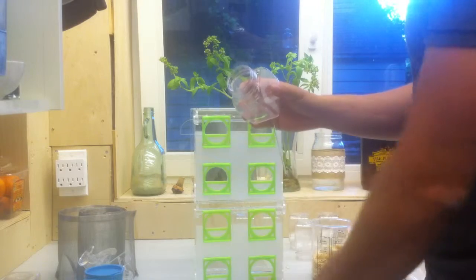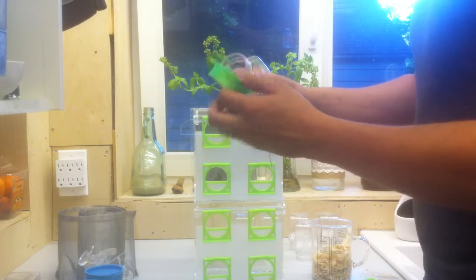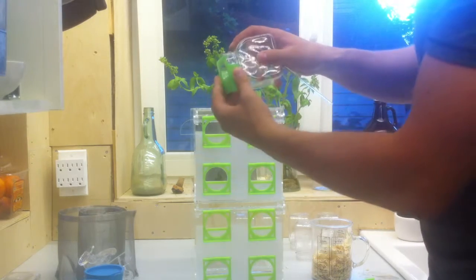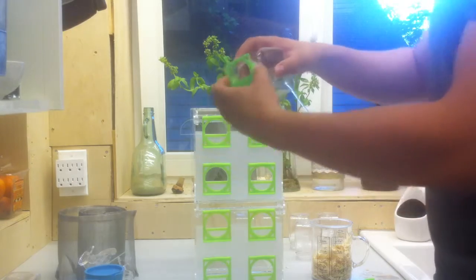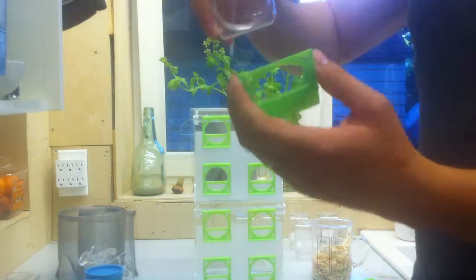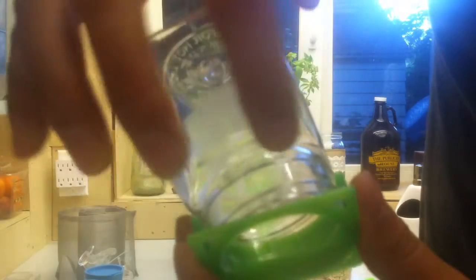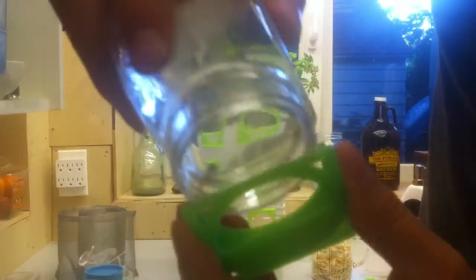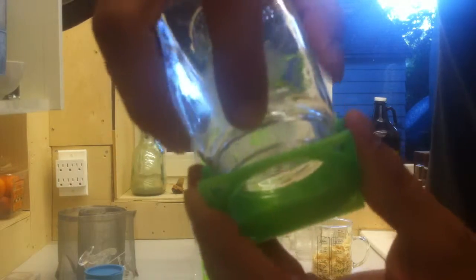Now the last thing we're going to do is take one of the bottle collars, and we're going to slide it on like this. Now when you slide it on, I'm going to do it again closer to the camera. You want to make sure that there's no space here. You do not want to slide it on like that, or like that, because then crickets are going to escape through those openings. You want to make sure it's nice and snug, so push it in, and now there's absolutely no opening up top.